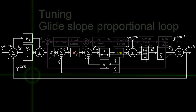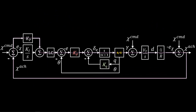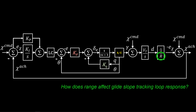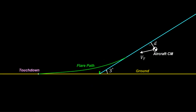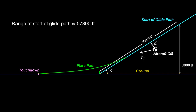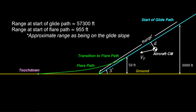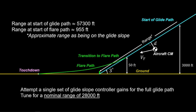Glide slope proportional loop: in the proportional loop, we notice a dependence on R, the range to the transmitter. At the start of a three-degree glide path, range to the transmitter is 57,000 feet. Assuming we transition to the flare path at 50 feet, range is just under 1,000 feet. So we first attempt a single set of glide slope controller gains at a midpoint range for initial tuning, at approximately 28,000 feet of range.